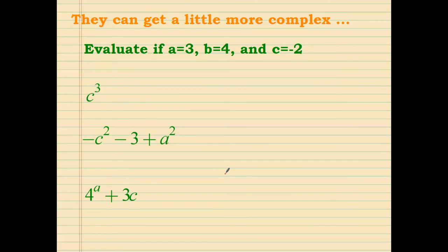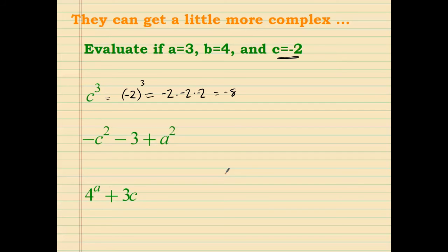These can get tricky when dealing with negative numbers. Whenever you substitute negative numbers — when c is a negative number — substitute the c value into the expression. With negative 2 to the third power, since the exponent is touching the parentheses, it affects everything inside, so we have negative 2 times negative 2 times negative 2, which equals negative 8.